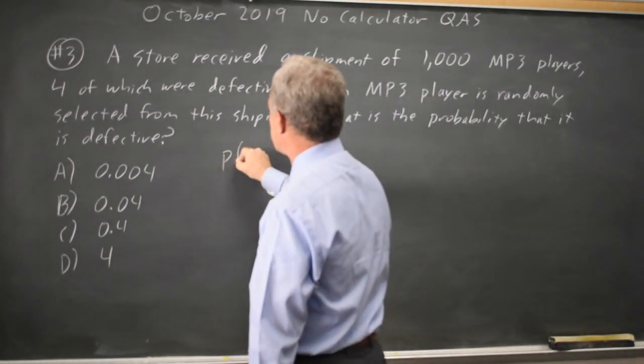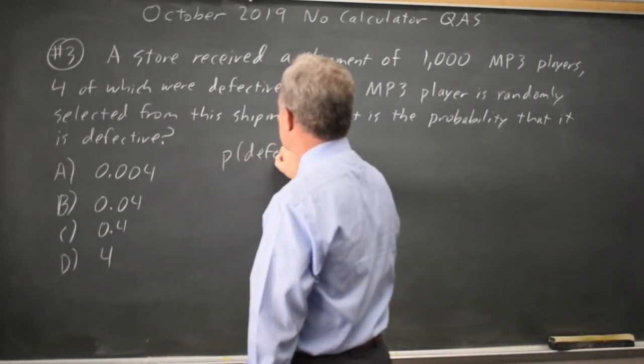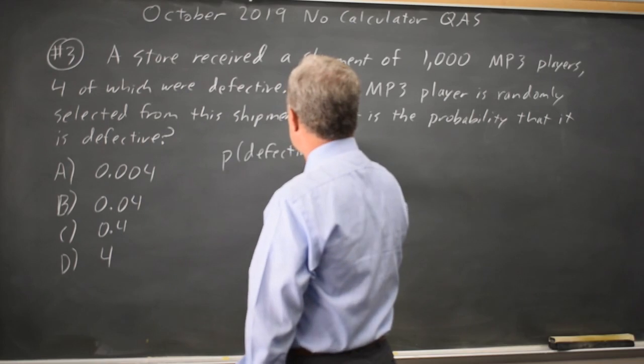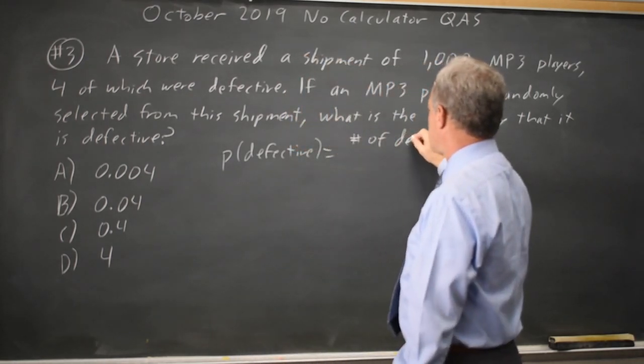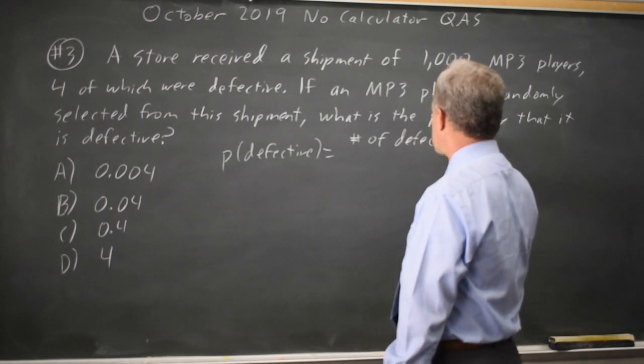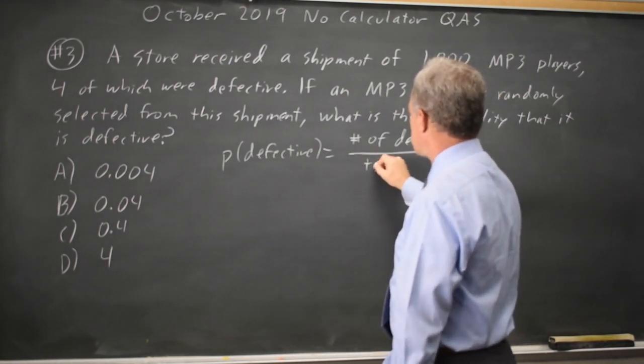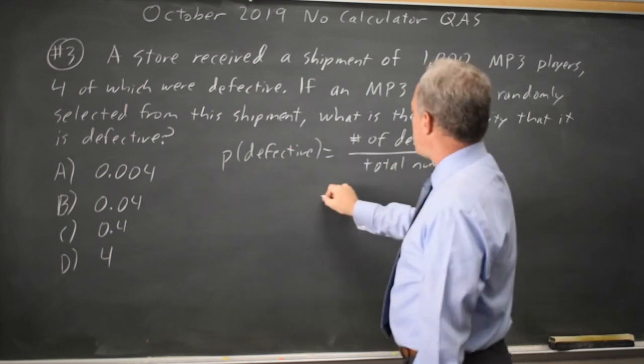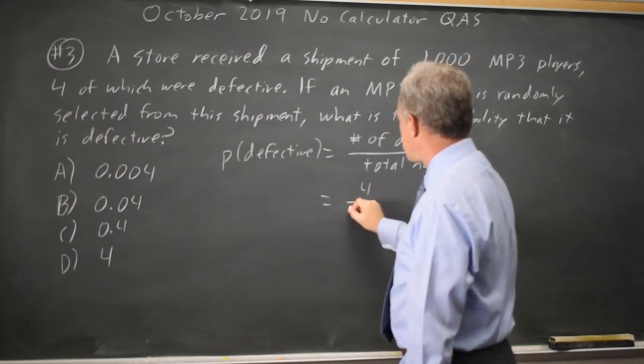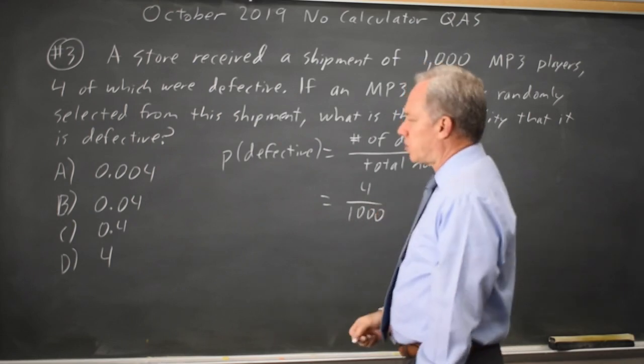So the probability of defective is number of defective over total number. The number of defective is four, the total number is 1,000. That is four over 1,000.